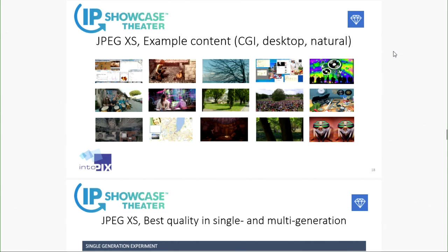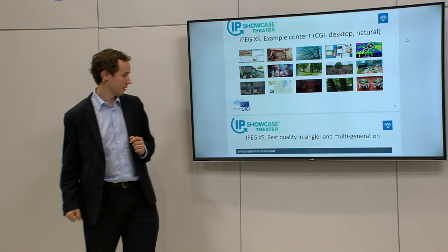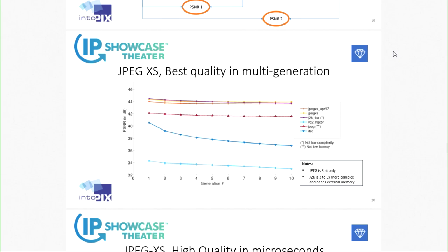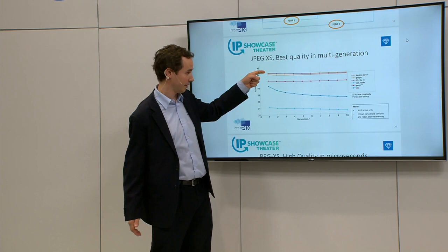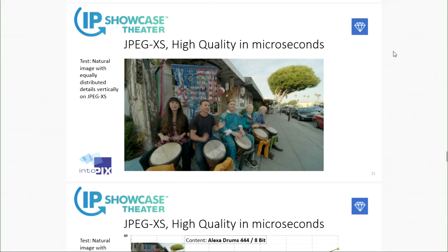Our test set mixed CGI, natural content, movie content, and desktop content with fine text and graphics. We tested broadcast content as well as computer-generated content. We performed PSNR analysis on single encoding loops and on multiple generation loops. What we observe is that JPEG XS meets the best quality in multiple generation tests, compared to other technologies like JPEG, DSC (used in HDMI 2.1 for 8K), and VC-2 — showing higher PSNR increase and robustness after multiple encoding/decoding generations.